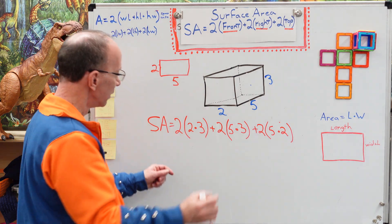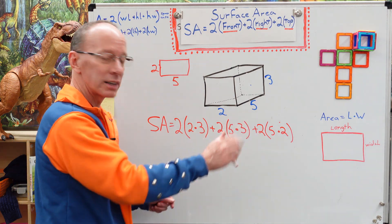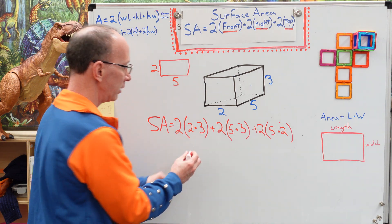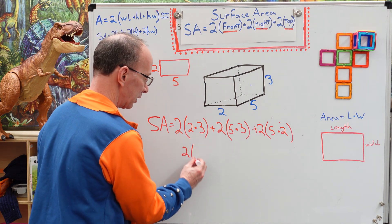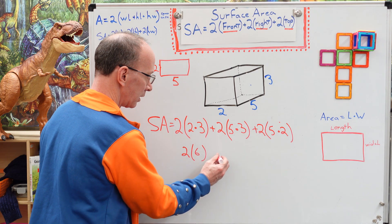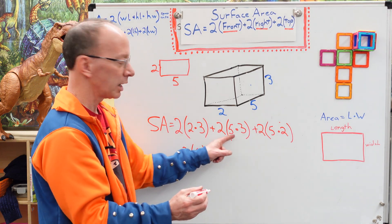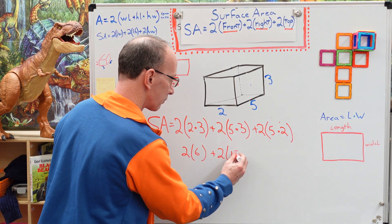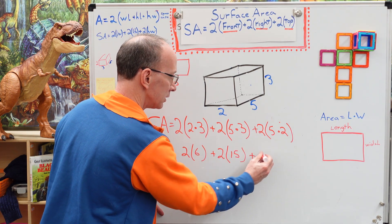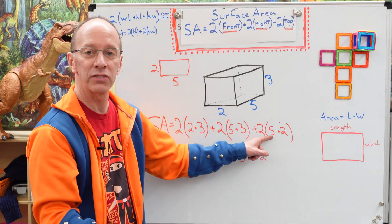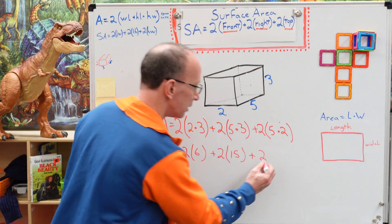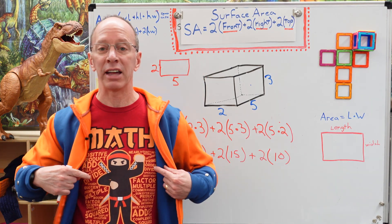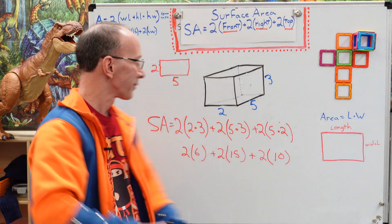Pretty easy. All we have to do is figure this out. So we have two times three, which would be six, so I'm going to put the two here, and then six plus two times, what is five times three? Fifteen. And then we're going to go on to the last one. What is five times two? Ten. You guys are super math ninjas. That's why I got my math ninja shirt on.